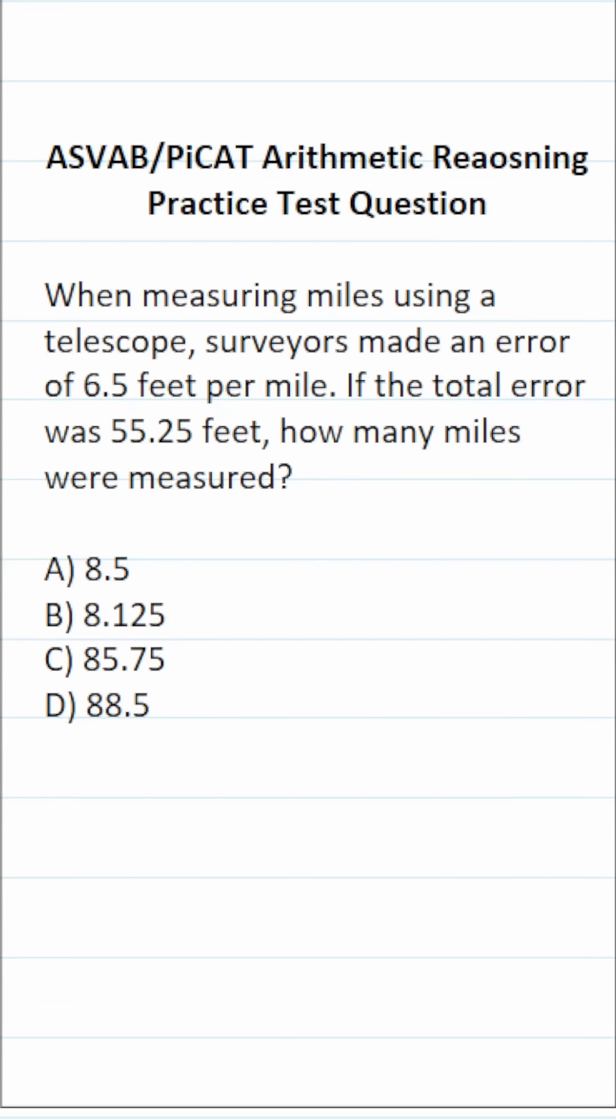This arithmetic reasoning practice test question for the ASVAB and PiCAT says, when measuring miles using a telescope, surveyors made an error of 6.5 feet per mile. If the total error was 55.25 feet, how many miles were measured?